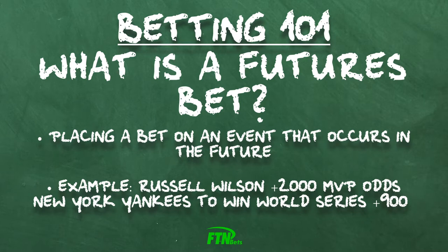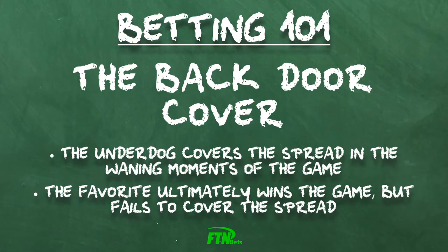A backdoor cover occurs when a favorite was covering the spread until a late flurry of scoring by their opponent ultimately drops the final score below the point spread. The favorite ultimately still wins the game, but not by enough points to cover what bettors had to put on them. The underdog lost the game, but stayed within the point spread, thus executing a successful backdoor cover.